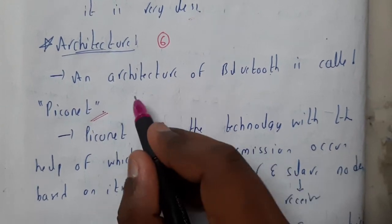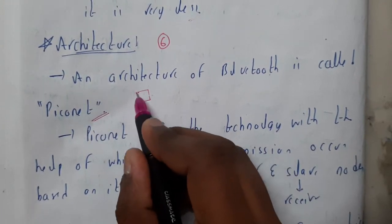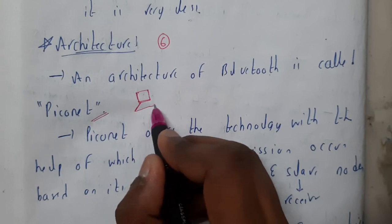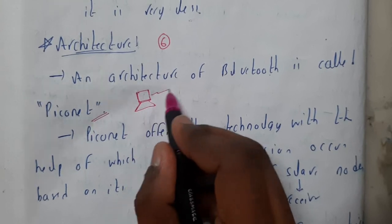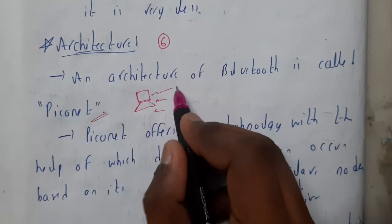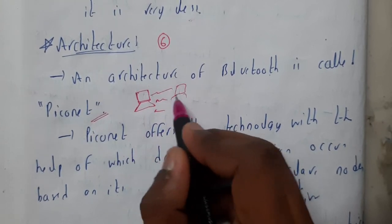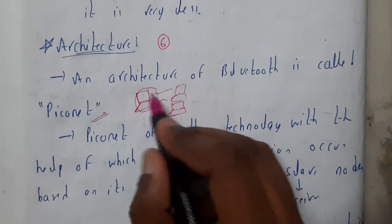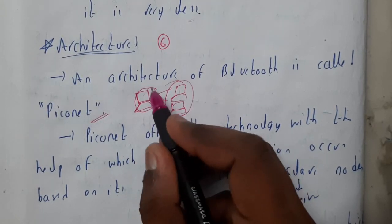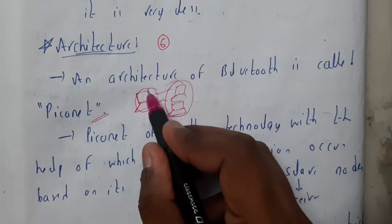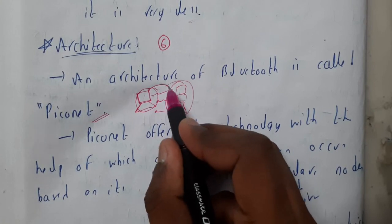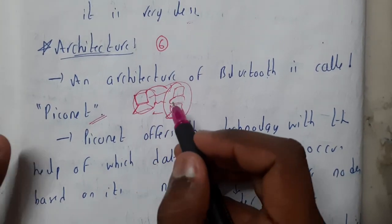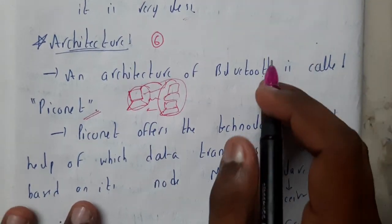So basically in a piconet, we will be having a primary system or the master system which will be sending data to the child systems or the slave systems. If it is a master, we will be calling them as slaves. The transfer of data will be only in one direction — that is nothing but the piconet.